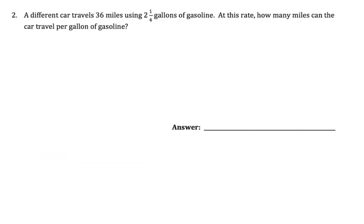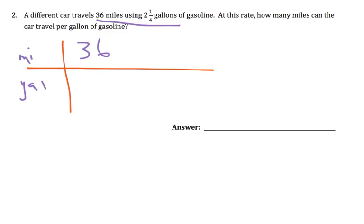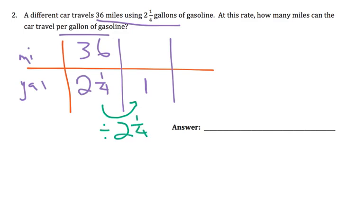Alright, number 2 is the same type of problem. So let's do miles and gallons. And our starting ratio is 36 miles using 2 and a fourth gallons. And at this rate, how many miles can the car travel per gallon? So that's telling us that we need to get to 1 right here. So let's use the strategy of dividing 2 and a fourth by itself, and then dividing 36 by 2 and a fourth to figure out what the unit rate is.